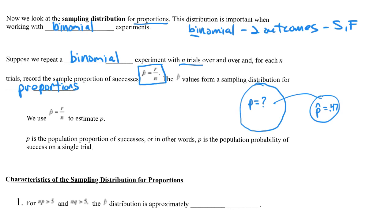The way we can make this a binomial experiment is to ask a yes-or-no question: do you support the president's policies on science? You can do it for voting too — will you vote for Bernie Sanders, yes or no? You can turn these questions into binomial questions with two outcomes, and then use sample proportions to make estimates about the population proportion.